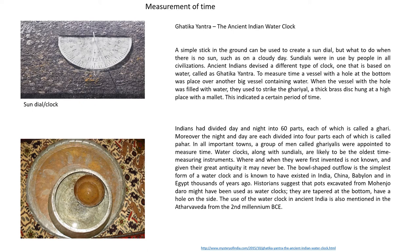In the Ghatika Yantra apparatus, a small hole is created at the bottom of a metal bowl and placed in a large vessel containing water. Graduation marks were etched on the surrounding walls of the bowl. As the bowl is placed in the water-containing vessel, water starts flowing in. The time taken for the water to reach each graduation mark could tell the exact time, even during cloudy or rainy days or at night.